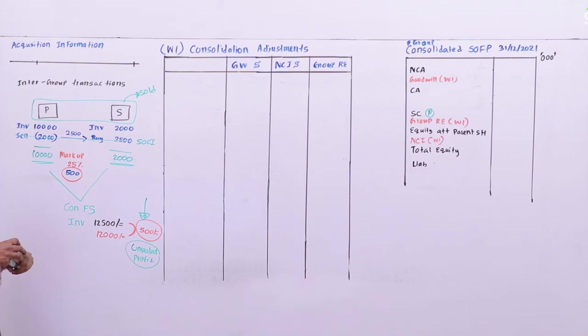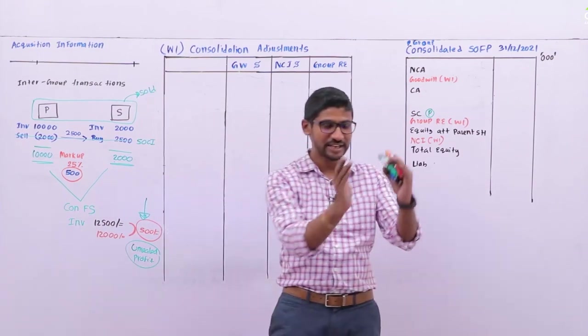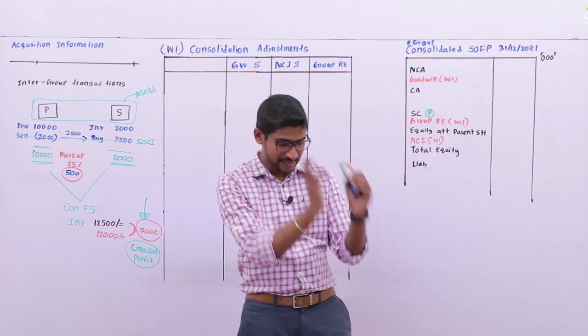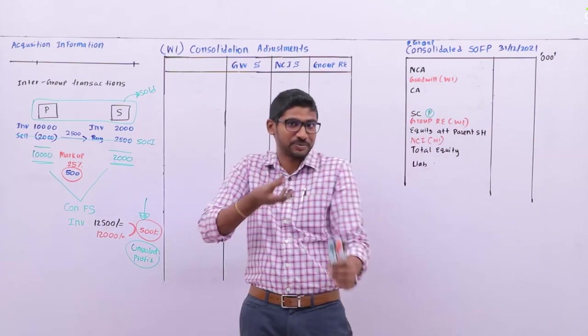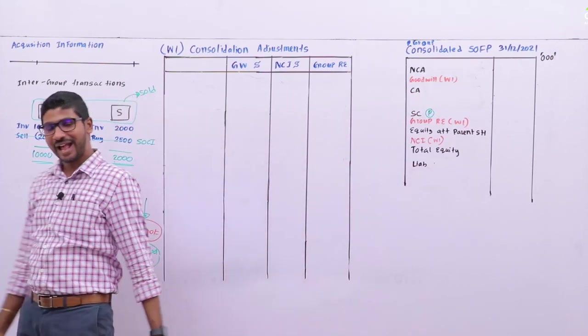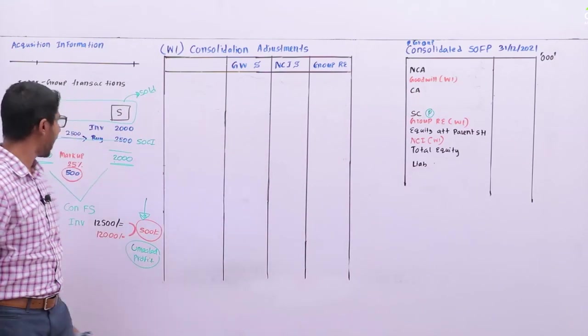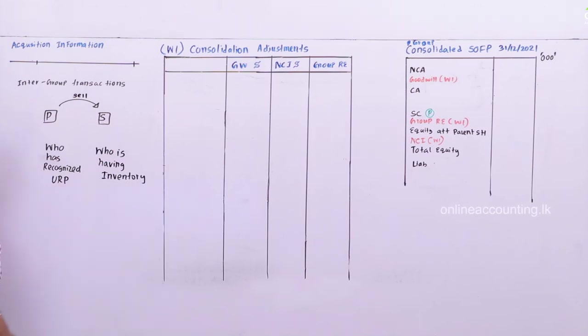The unrealized profit is realized when we are selling it to outside parties. Can you remember - father is selling the necklace to mother, mother is selling it to an outside party, then the unrealized profit is getting realized. If the profit is getting realized, are you required to worry? No, you are not required.